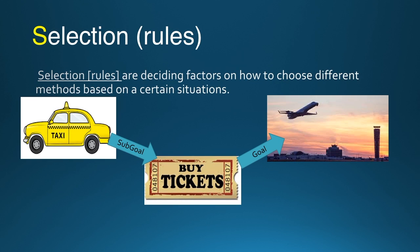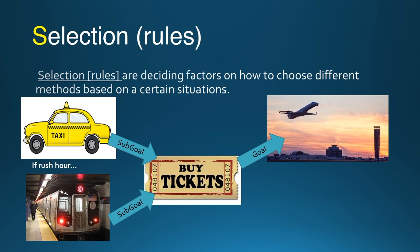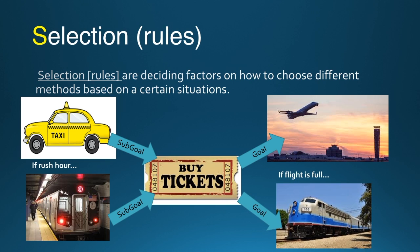You can think of Selection Rules as if-or statements. They are deciding factors on how to choose different methods based on certain situations. For example, if a cab doesn't arrive in time, you can take a train to go buy the tickets. Or, if there are no more tickets, you could always take a train to go to Boston.